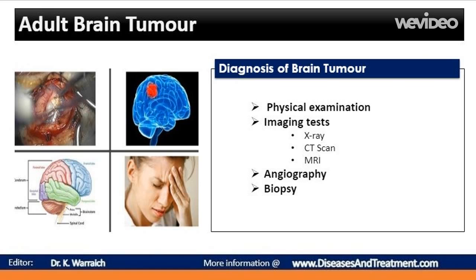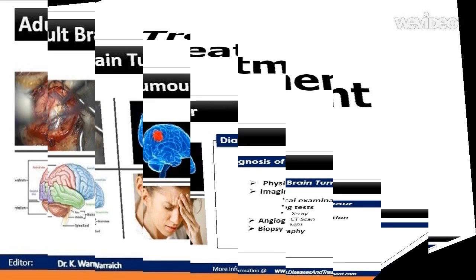A biopsy involves obtaining a small piece of the tumor. A specialist called a neuropathologist will examine it. The biopsy will identify if the tumor cells are benign or malignant, and will also determine whether the cancer originated in your brain or another part of your body.